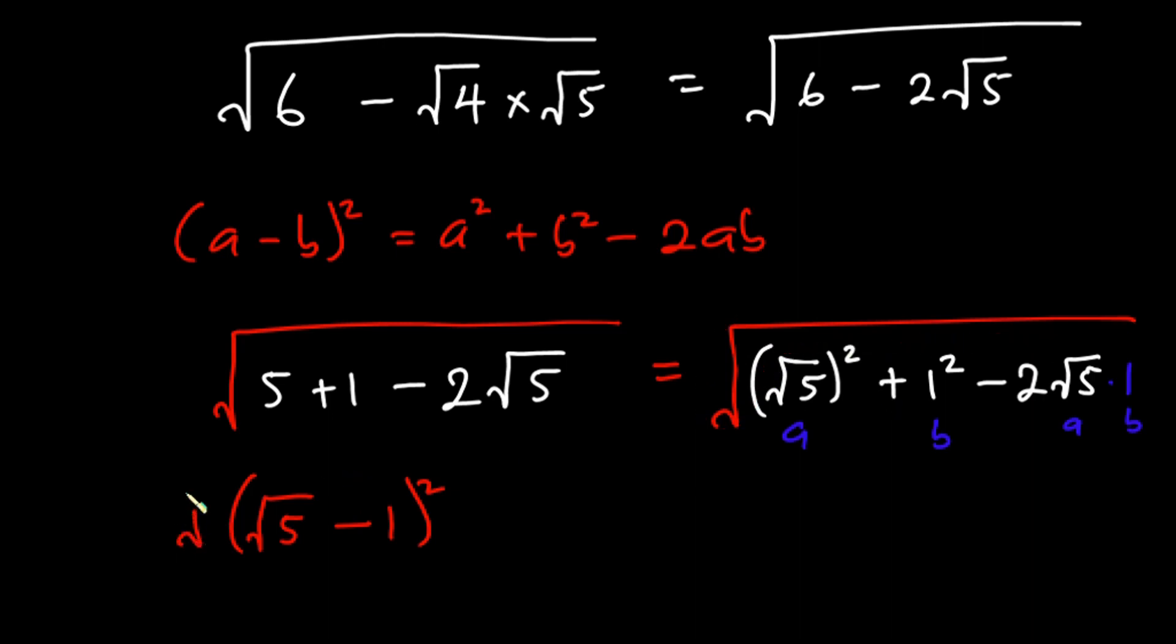We'll put it down. Straight away we can see that this square will cancel this square root, and now we have square root of 5 minus 1, which of course is the final answer to this problem.